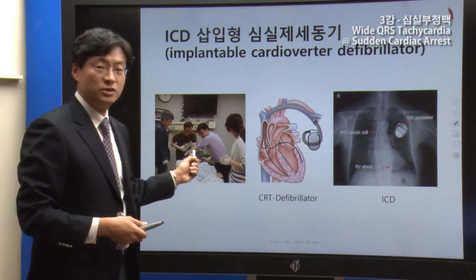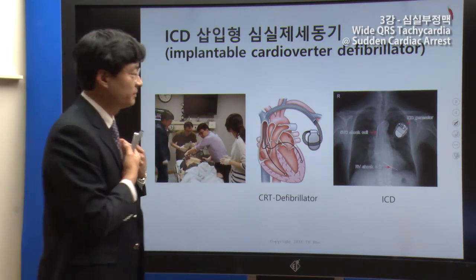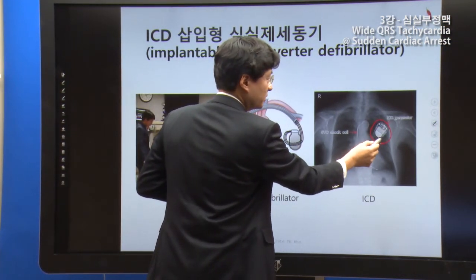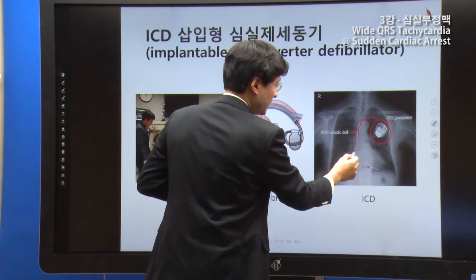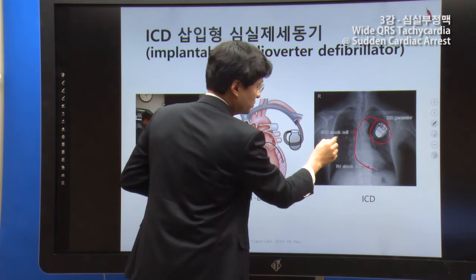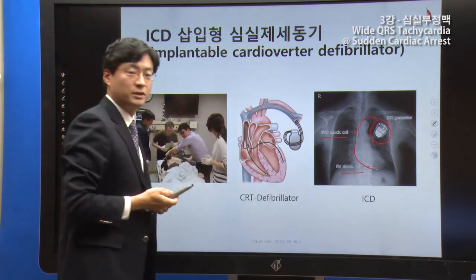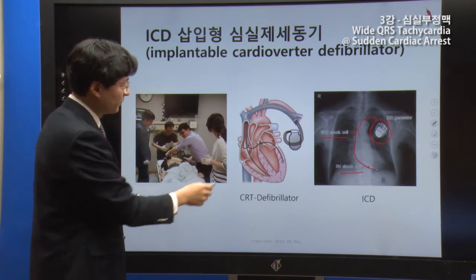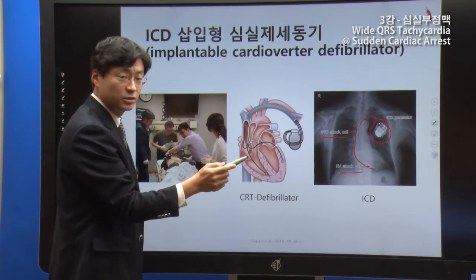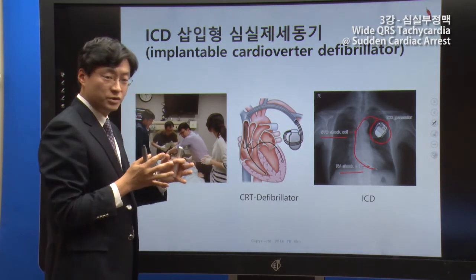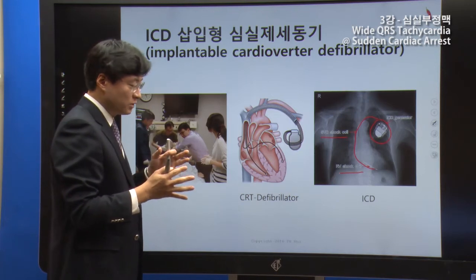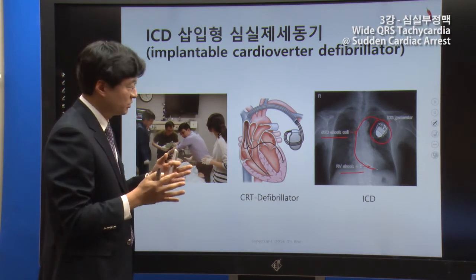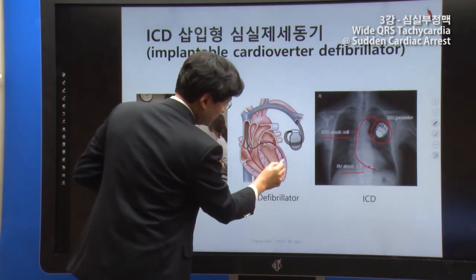The ICD is implanted similarly to a pacemaker. The generator is placed on the right side of the chest, and a lead is inserted through a vein into the heart. When a dangerous arrhythmia is detected, the device delivers a shock immediately. For patients with severe heart failure where the ventricles are not contracting in synchrony, two additional leads can be added for cardiac resynchronization — this is the CRTD.